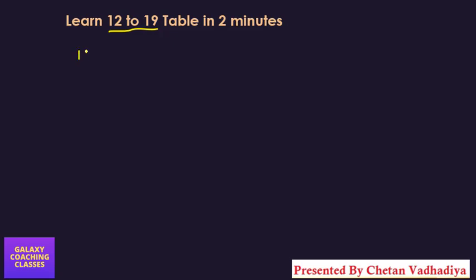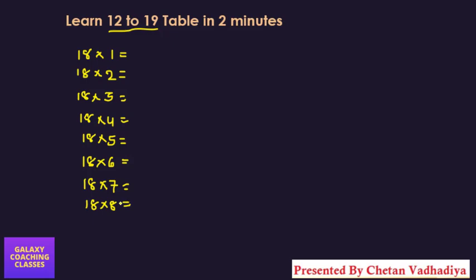So let us start. First of all, let me explain 18. So 18×1, then 18×2, 18×3, let me write down equals to also, 18×4, 18×5, 18×6, 18×7, 18×8, 18×9, and 18×10.